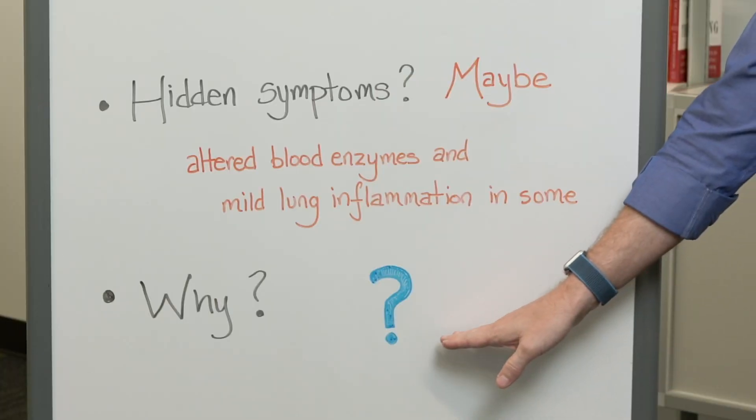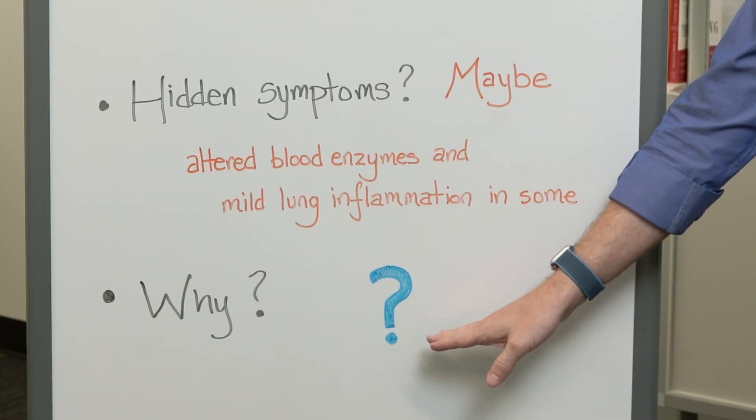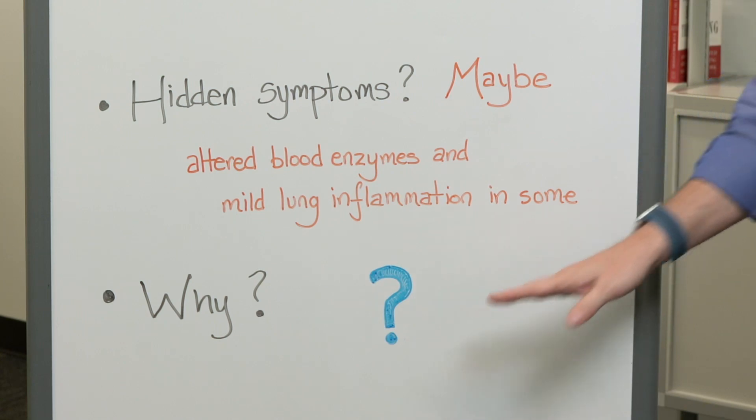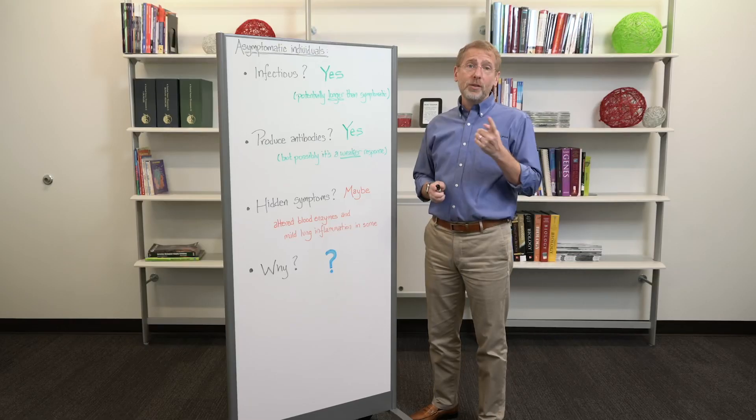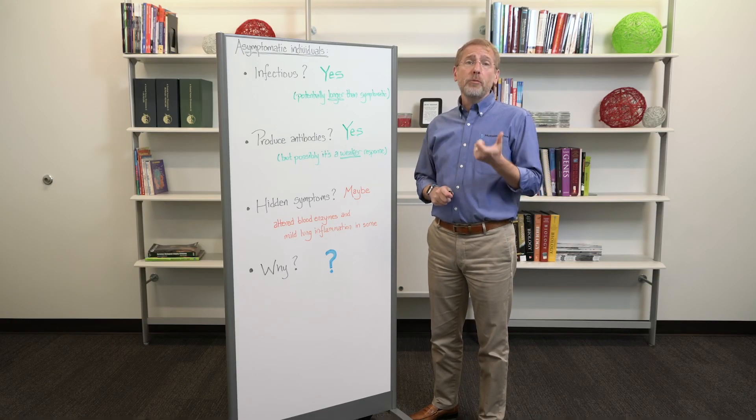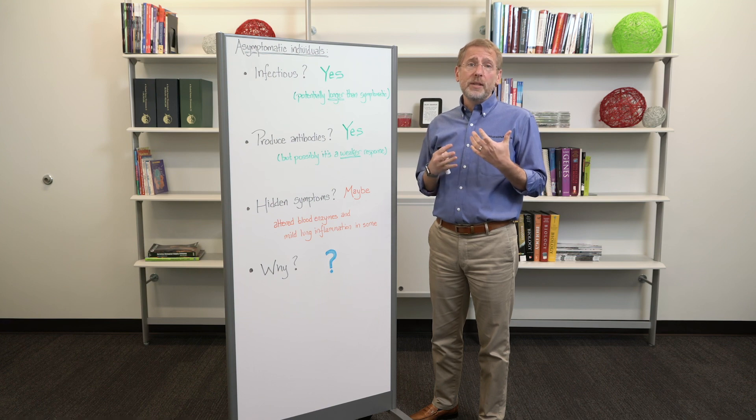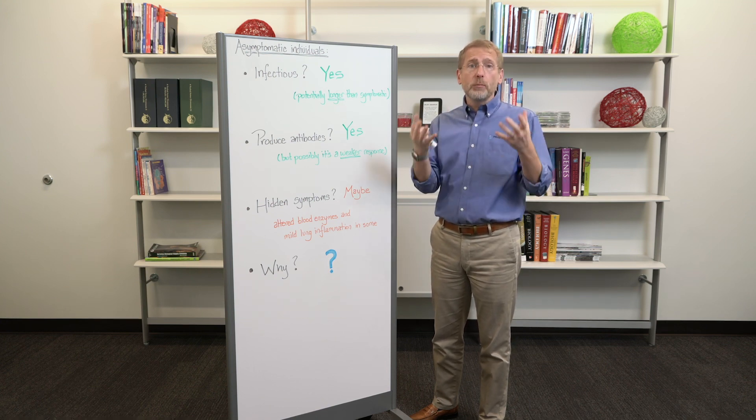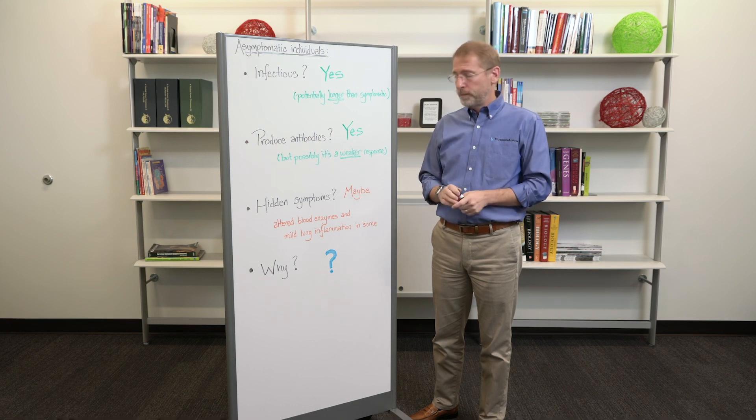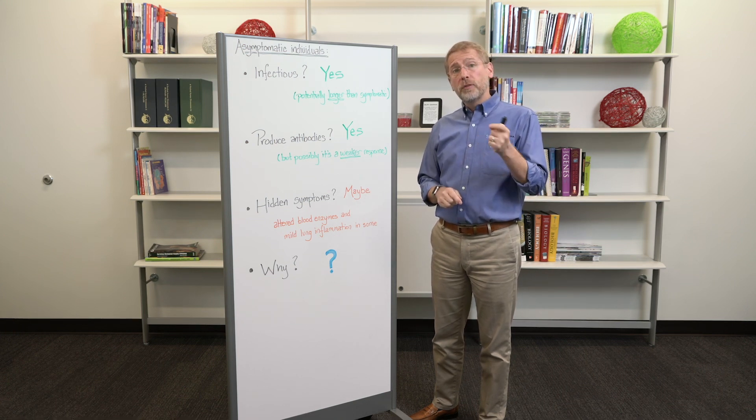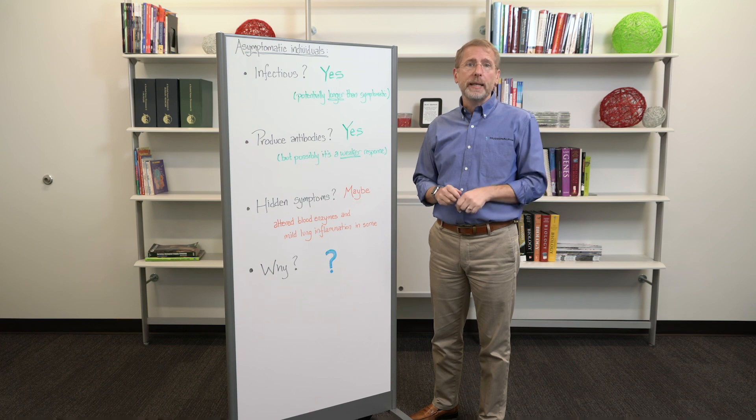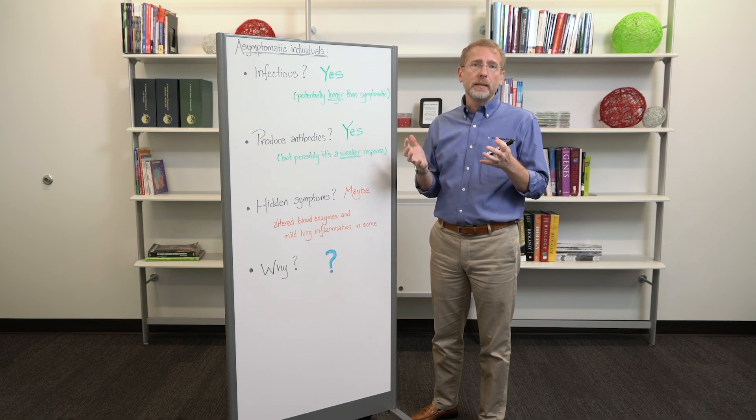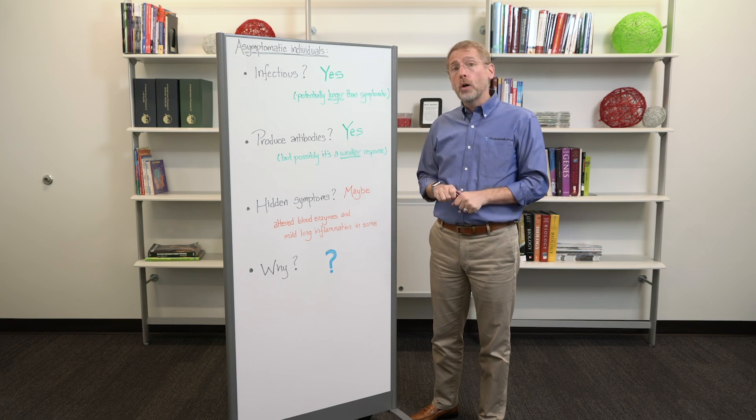And then the $64,000 question, why are some people asymptomatic and other people incredibly ill? That's what we don't know. Some of that is probably due to our immune system and how well it detects and responds to infectious agents. We know that for flu there are asymptomatic individuals as well, but we don't have a lot of data either for flu or for COVID-19.